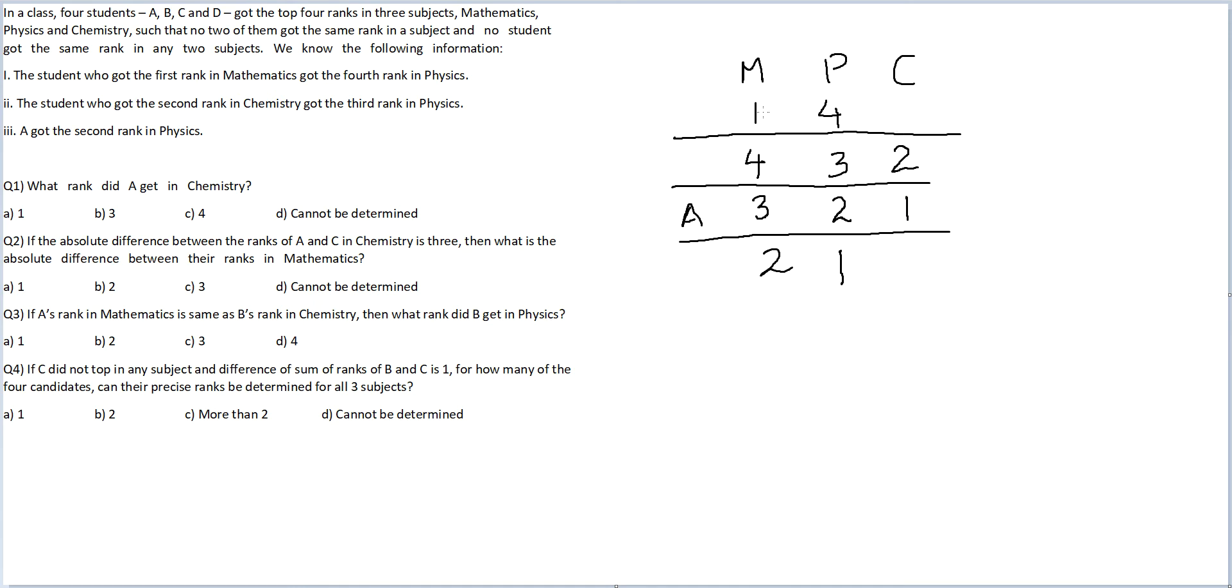Now, this person, whoever has rank one in Maths or rank four in Physics will either have rank two or rank three in Chemistry. He cannot have rank two because rank two is already occupied by someone. So this will be rank three. And therefore, this last person here will have rank four.